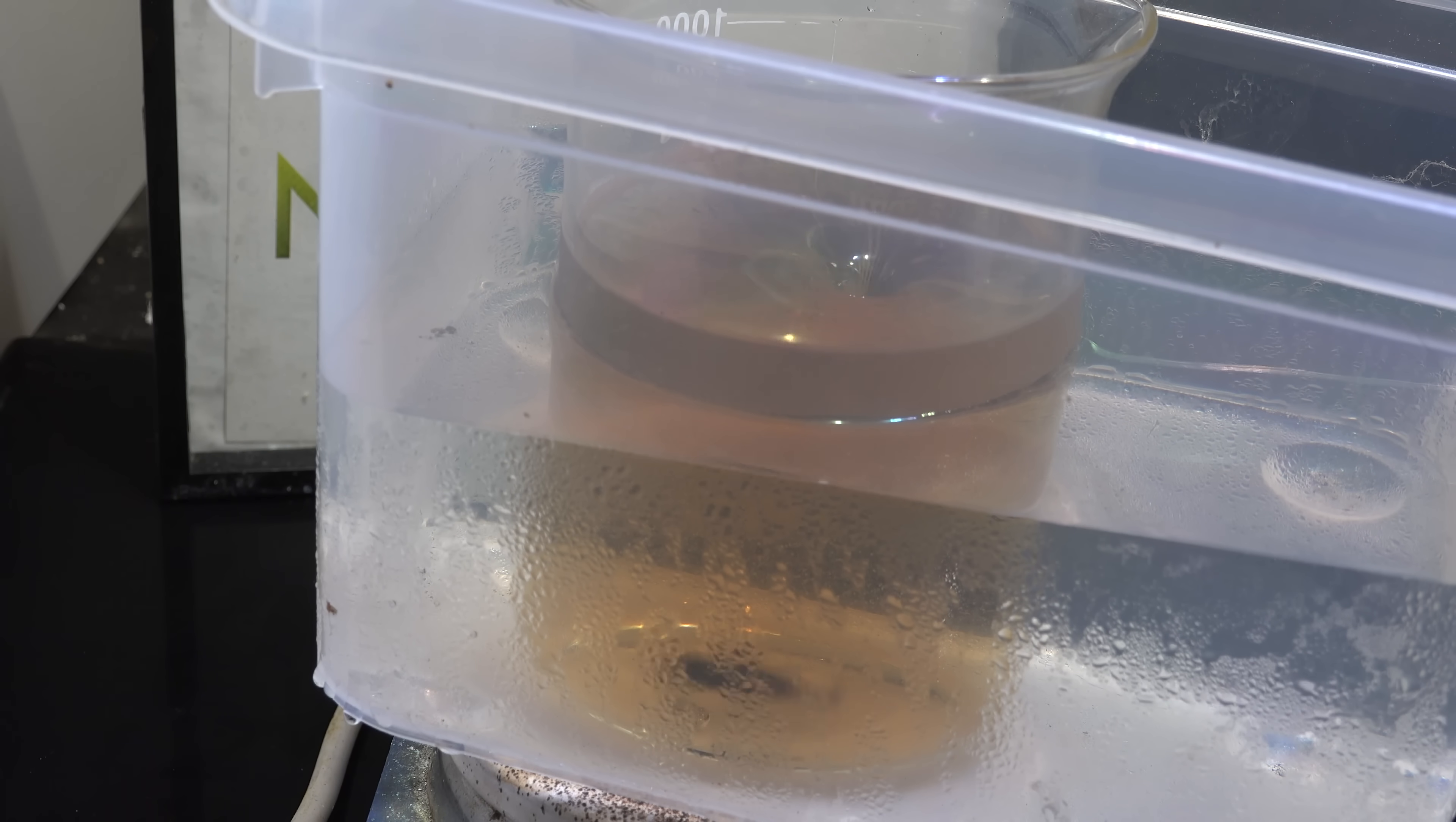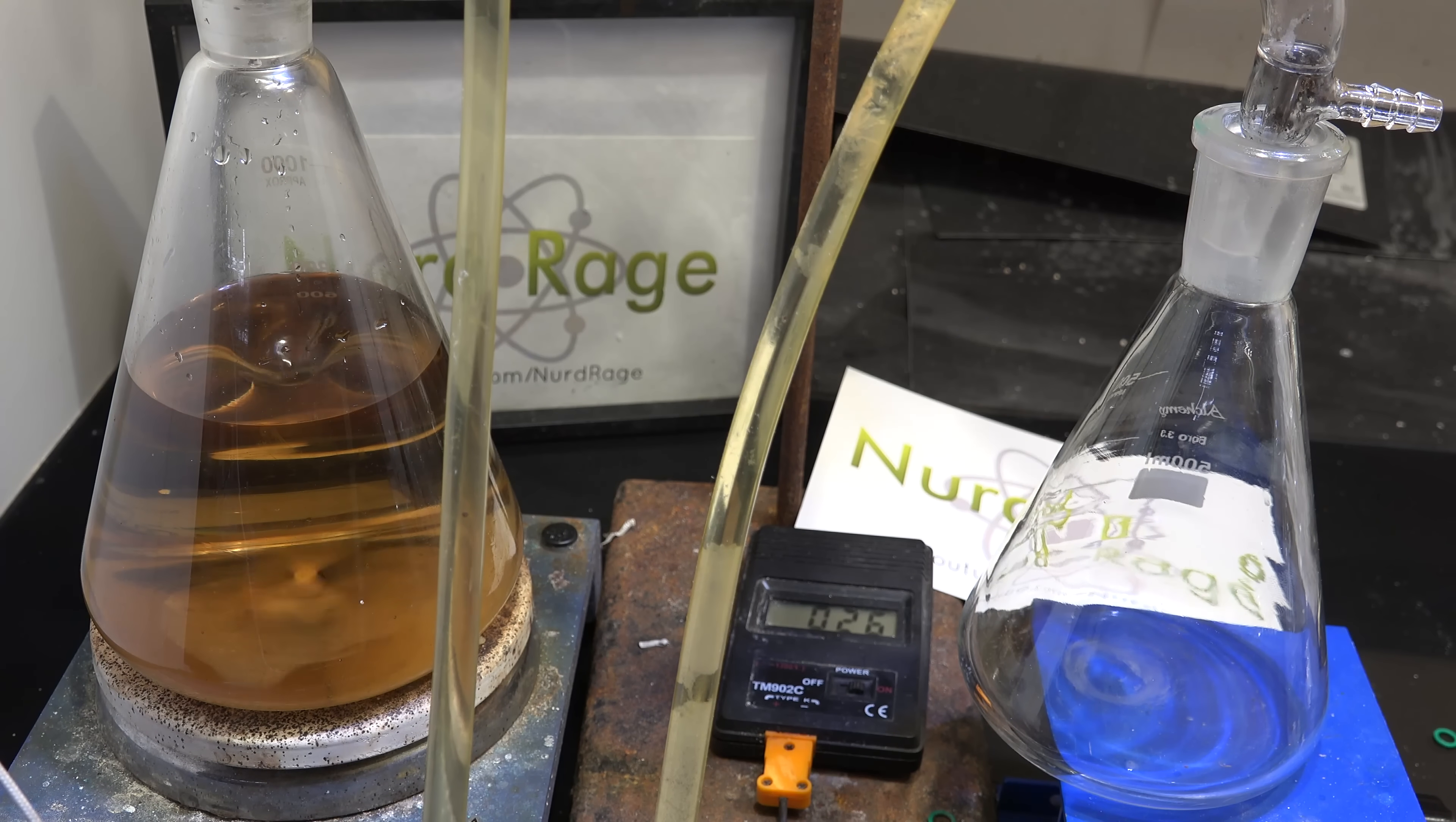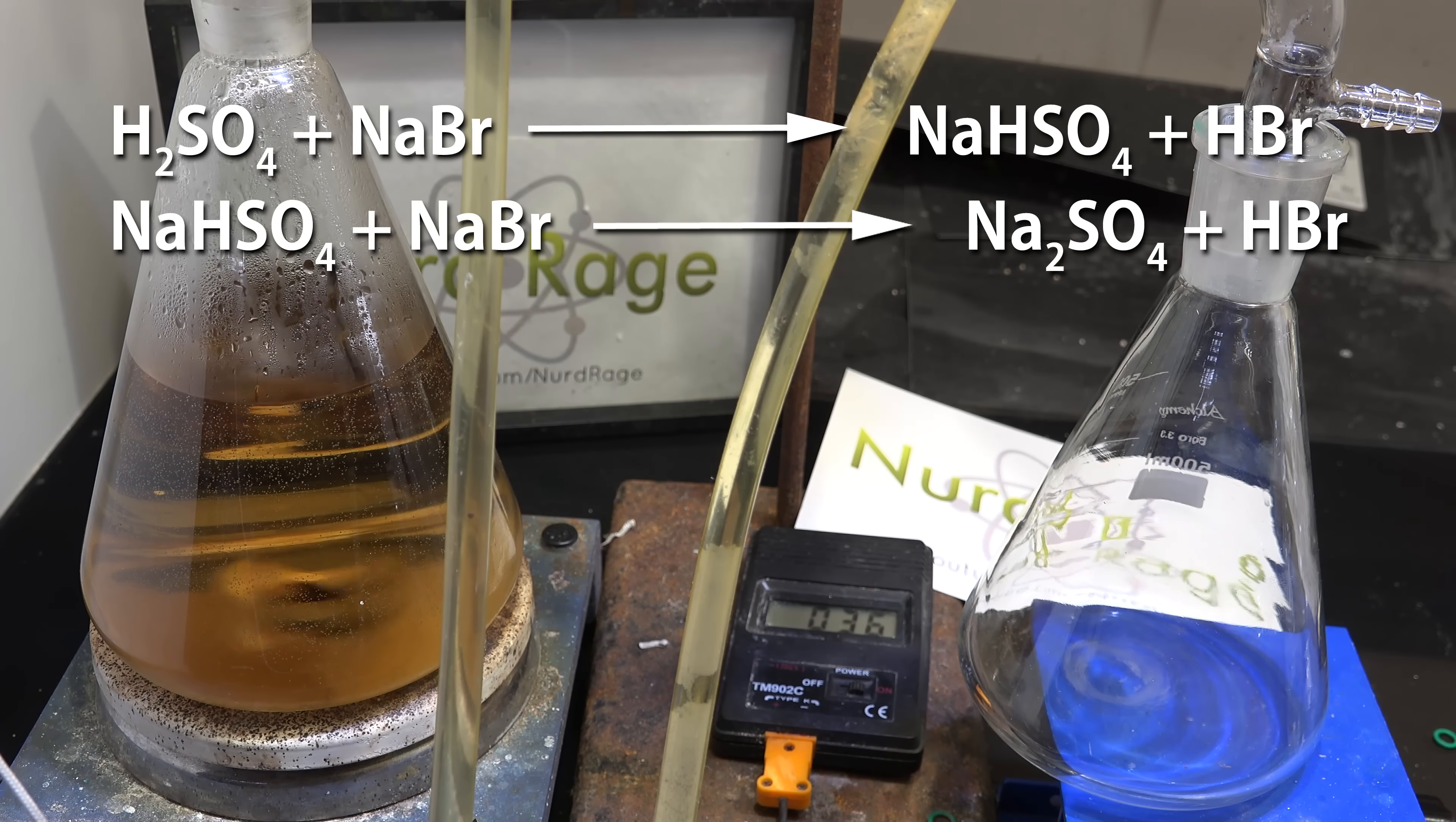We'll just distill out the excess water first. We pour the mixture into a flask and set up a simple distillation apparatus. We then turn on the heat and begin distillation. So what's happening?